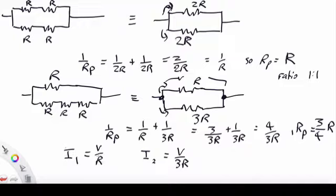In other words, I1 will be 3 times I2. So the ratio will be 3 to 1 of current in the top branch to current in the bottom branch.